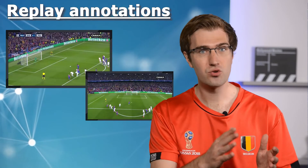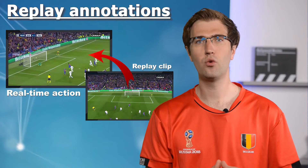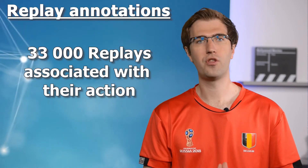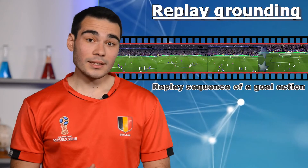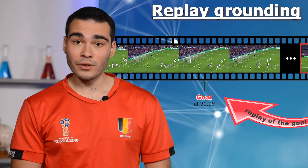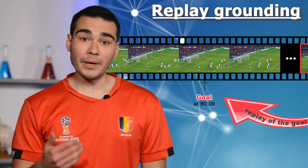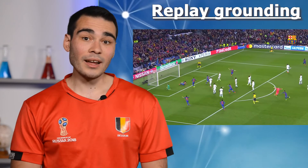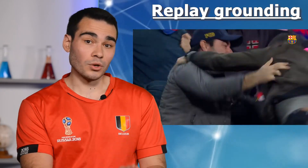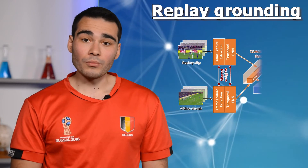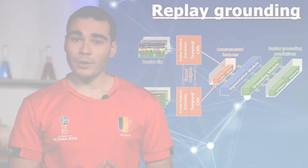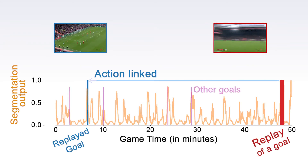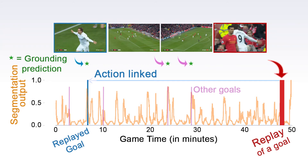Finally, we delimit each replay with camera-like timestamps, and we also indicate which action of the live game is replayed. Almost 33,000 replays are associated with their corresponding action. In that regard, we introduce a third and novel replay grounding task, which consists in retrieving the timestamp of the action shown in a given replay shot within the whole game. Derived applications may be further built on top of this task, such as automatic highlight production, as the most replayed actions are usually the most relevant. For this task, we design our own approach based on Siamese neural networks. You will find all the details in the paper and in the code. Here is an example of results, showing that we can correctly learn to link a replay with its action, without necessarily spotting all the actions of the same class.